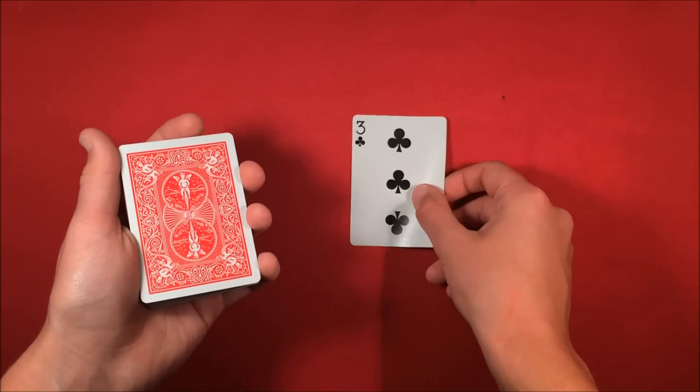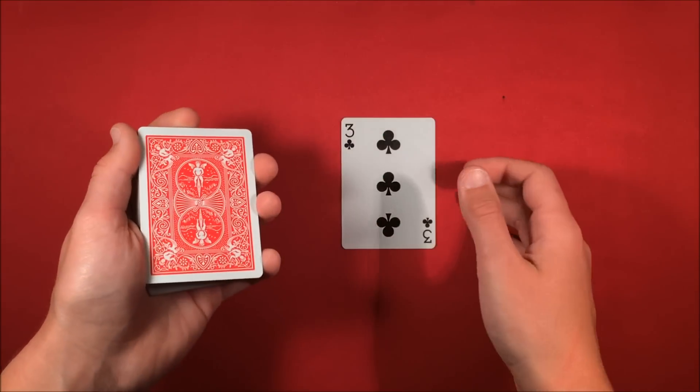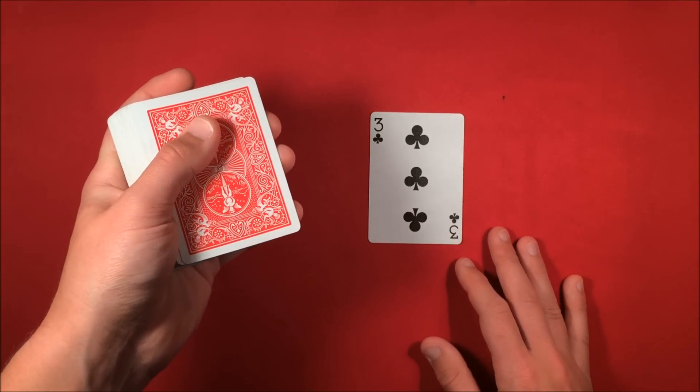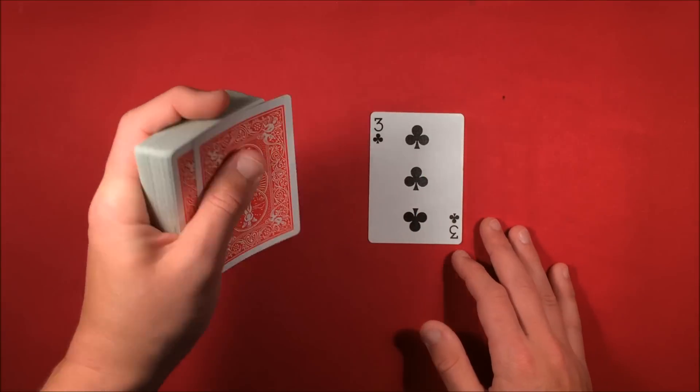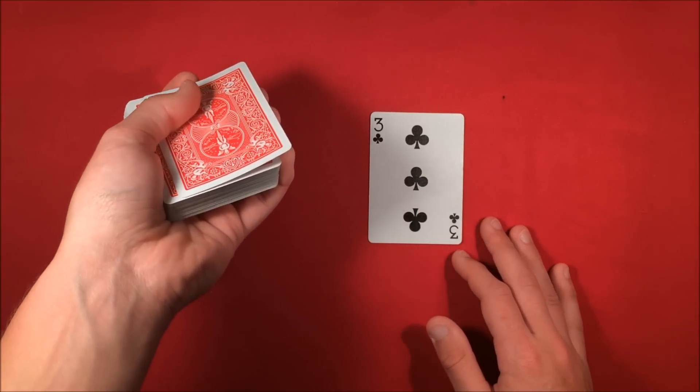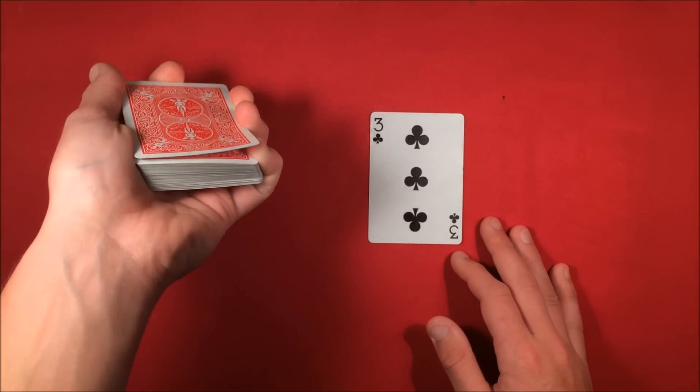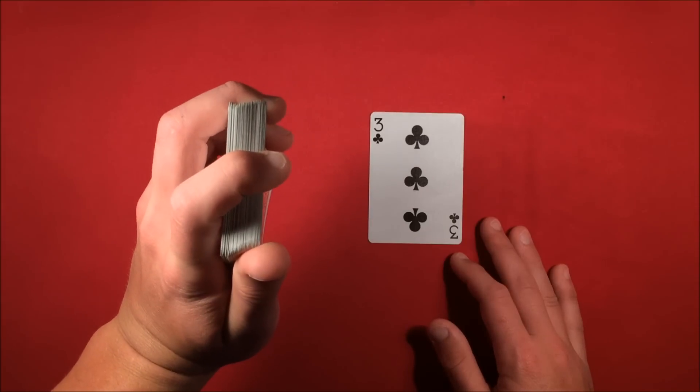But all you're going to do while you're misdirecting them is you can push over the top card. Once you get better at this you can just push over the top card with your thumb, pull it back and get a pinky break. So from the front you shouldn't see anything.